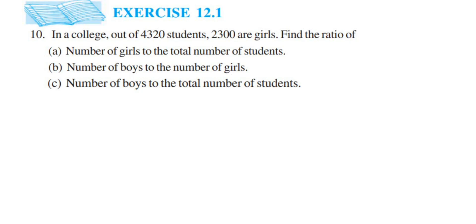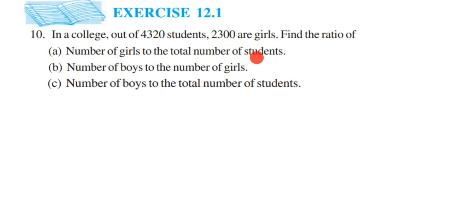Hello everyone, here is a question from Exercise 12.1, 10th question. The chapter is Ratio and Proportion. The question is: in a college, out of 4320 students, 2300 are girls. Find the ratio of the number of girls to the total number of students, the number of boys to the number of girls, and the number of boys to the total number of students.